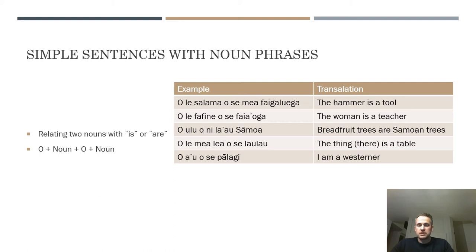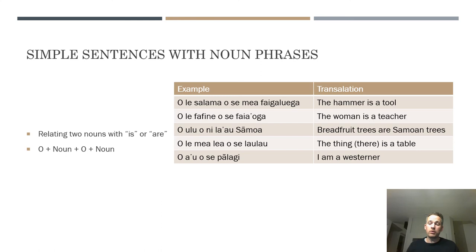'O a'u o se palagi' — this is applicable to me because I'm palagi. Palagi is the Samoan word for someone of European descent. 'Au' is the pronoun for 'I,' so 'o a'u o se palagi' means 'I am a palagi.' Hopefully that makes sense. What this does is open up the ability to make full sentences in Samoan. You can swap in any nouns you want — you don't have to say the hammer, you could say 'ole tui o se mea fai galuega,' meaning 'the fork is a tool.'